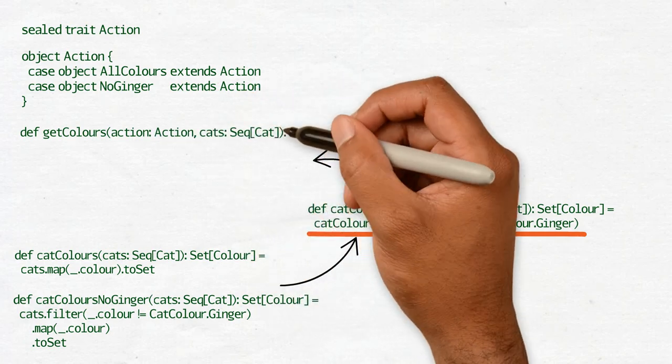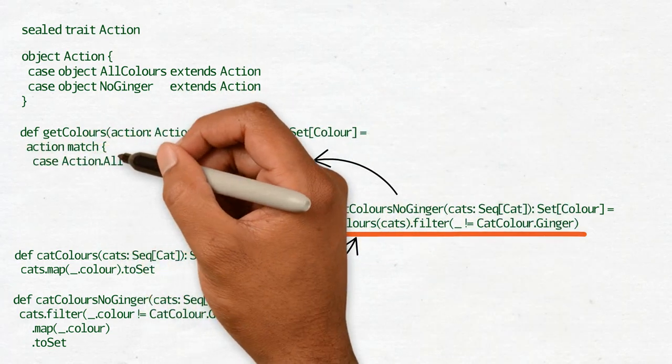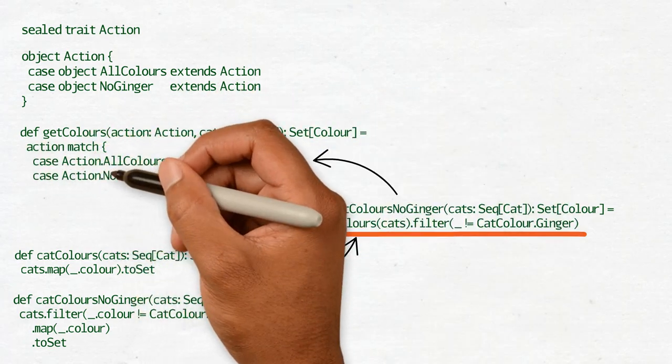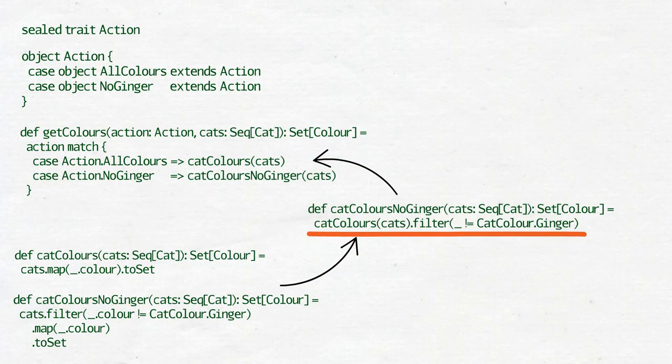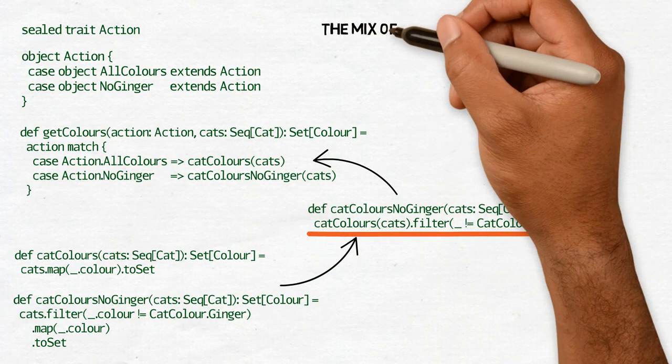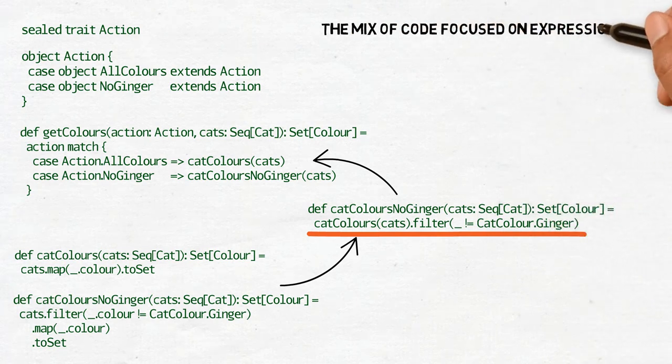And then we can create an expression that will get colors, but only if action is all colors, because if we use action no ginger, then we will get only colors of cats that are not ginger.